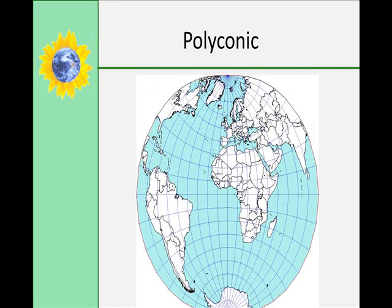The polyconic projection has a scale that is true along each parallel and along the central meridian. This ends part one, and we will continue with part two in just a second.